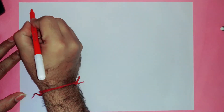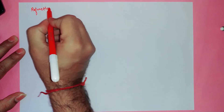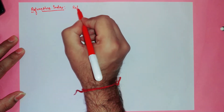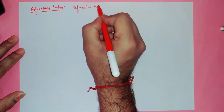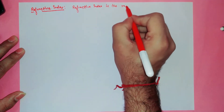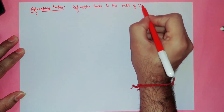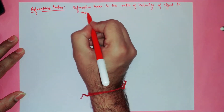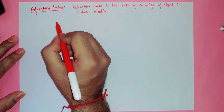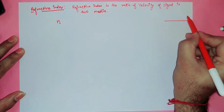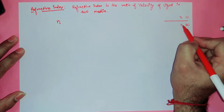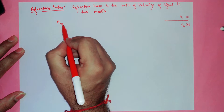Good morning class. Yesterday I told you about the refractive index. The refractive index is the ratio of velocity of light in a medium. Suppose we have two media: medium 1 and medium 2. In medium 1 the velocity of light is v1, and in medium 2 the velocity of light is v2. The refractive index of medium 2 with respect to medium 1 is calculated using these velocities.